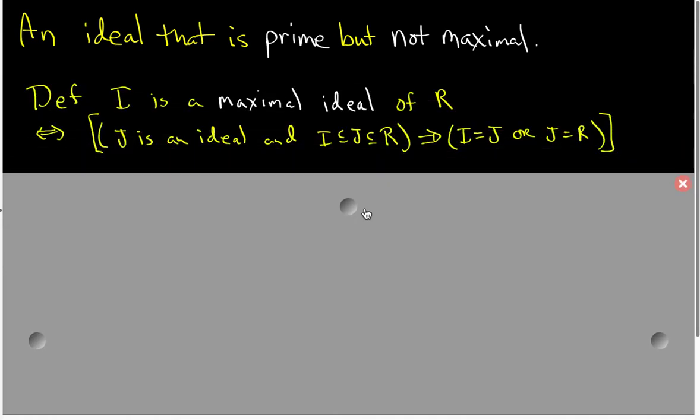I want to start by reminding you of the two definitions. An ideal I is a maximal ideal of a ring R if and only if we have the property that if J is an ideal and I is a subset of J, then we can conclude either that I equals J or that J equals R. In other words, there are no intermediate ideals between I and R that contain I as a proper subset.